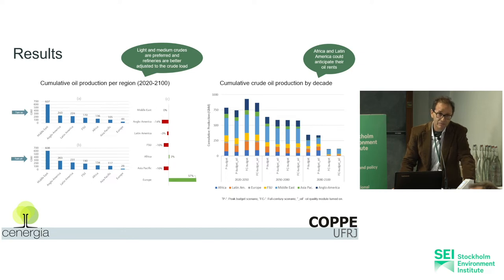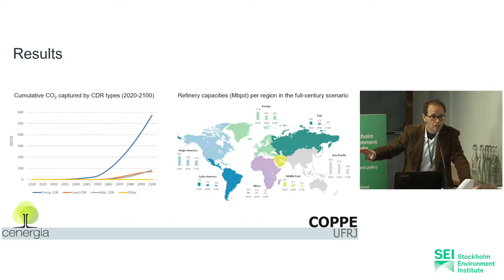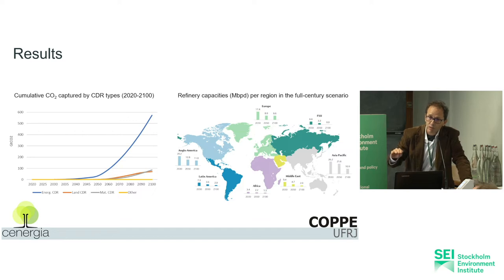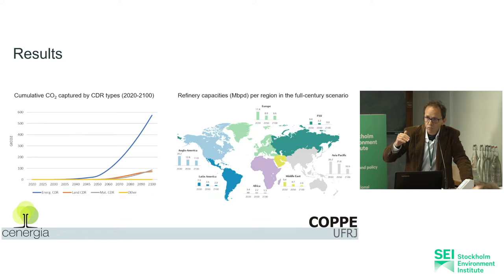Our model shows that because of the CDR — carbon dioxide removal options — some nature-based solutions and some technology-based solutions, mostly related to bioenergy with CCS, oil production can compensate for some remaining oil output. This can allow some countries and regions to keep producing crude oil. Obviously the oil production will vanish, but not as fast or as intensively as we see in the net zero report from the IEA, because of these carbon dioxide removal options.